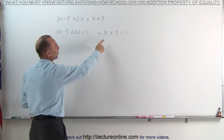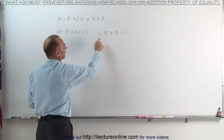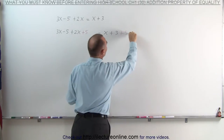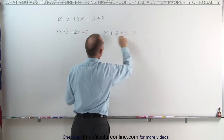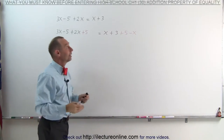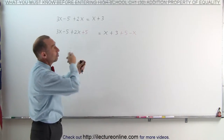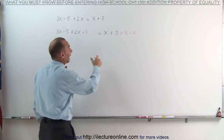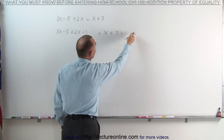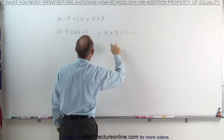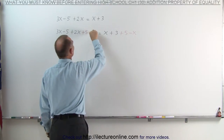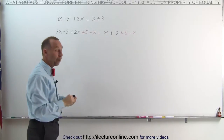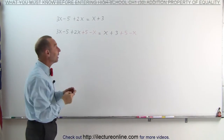I also want to get rid of the x on the right side, which means if I subtract an x on the left side, that x would be gone. But of course, the addition property of equality says if I add or subtract something from one side of the equation, I must do the same to the other side of the equation.